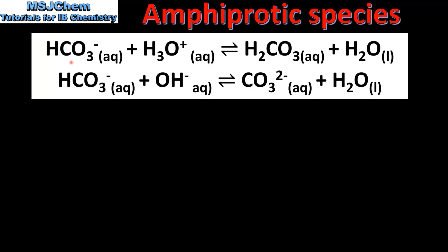In the first reaction the hydronium ion donates a proton to the hydrogen carbonate ion, which forms carbonic acid. In the second reaction the hydrogen carbonate ion donates a proton to the hydroxide ion, forming the carbonate ion. So in the first reaction the hydrogen carbonate ion is acting as a Bronsted-Lowry base and in the second reaction as a Bronsted-Lowry acid.